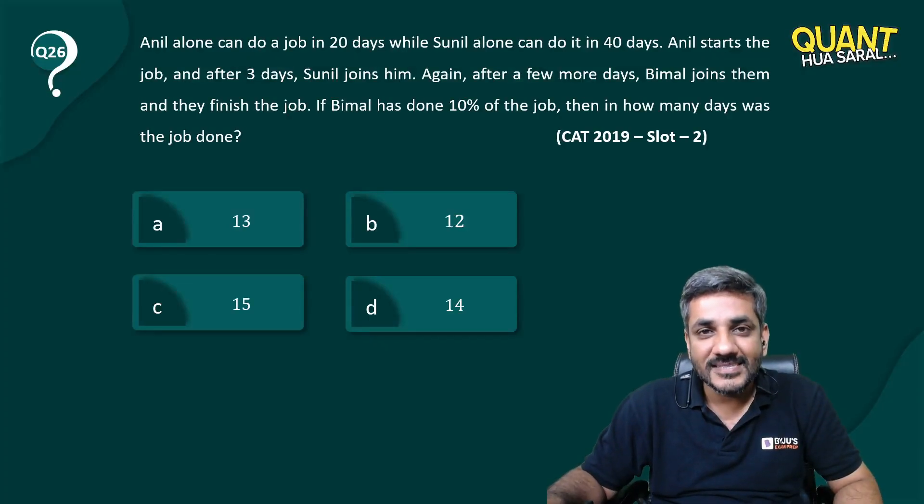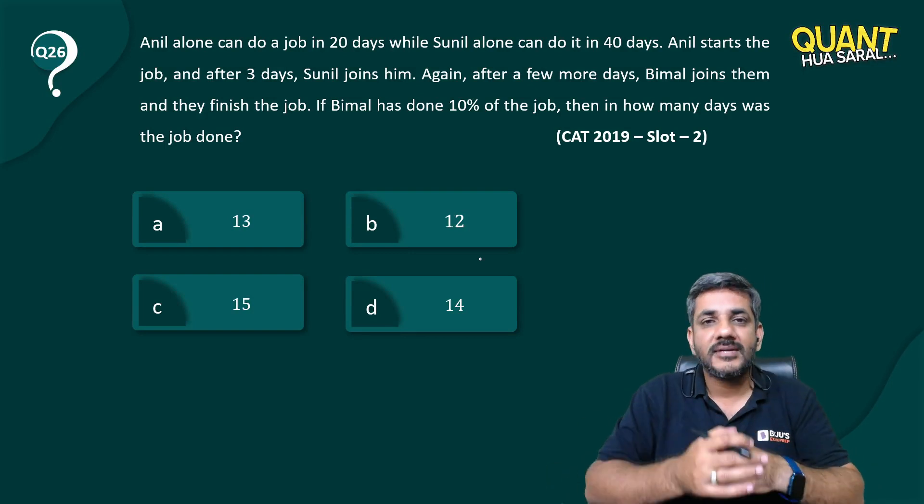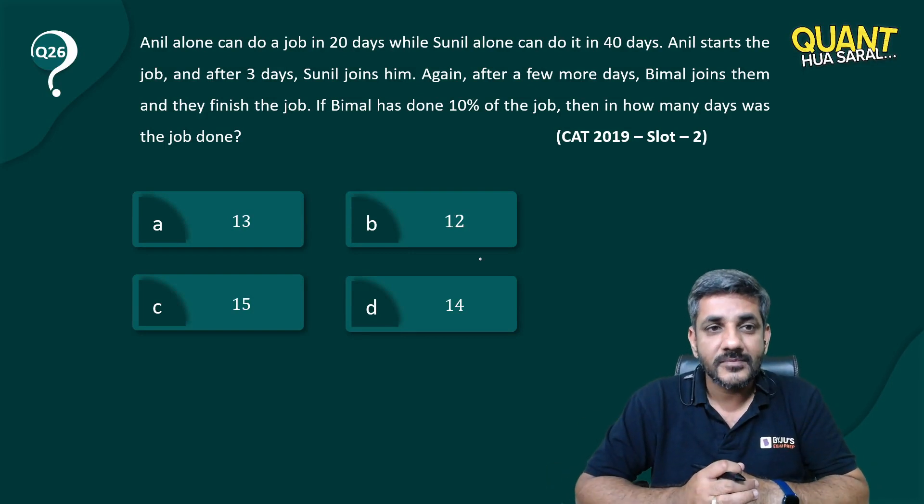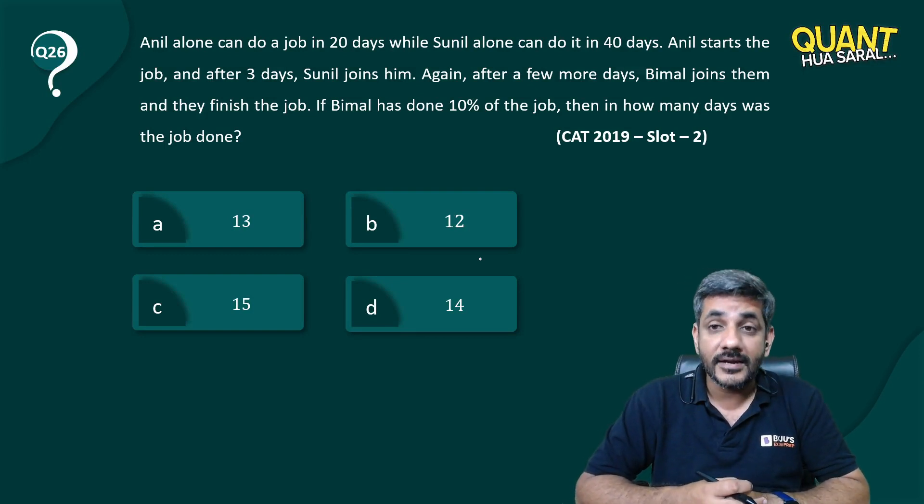Hi students, welcome back to the series. Here we have question number 26 today, once again from CAT 2019 Slot 2. Anil alone can do a job in 20 days while Sunil alone can do it in 40 days.